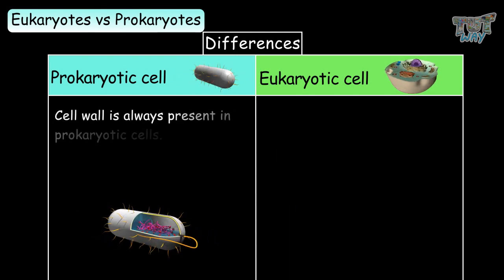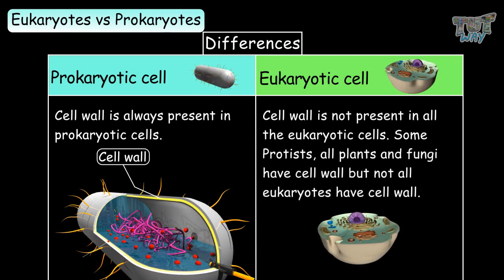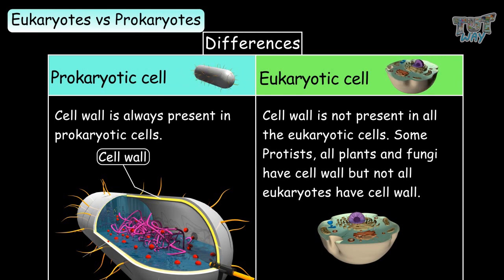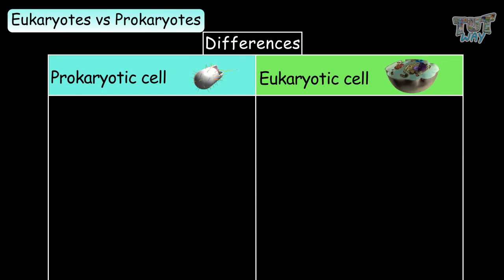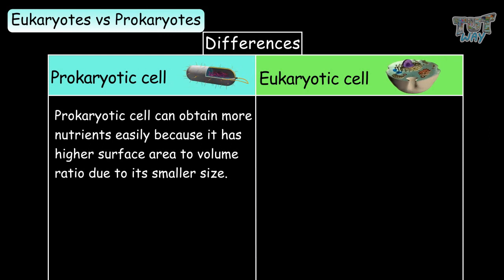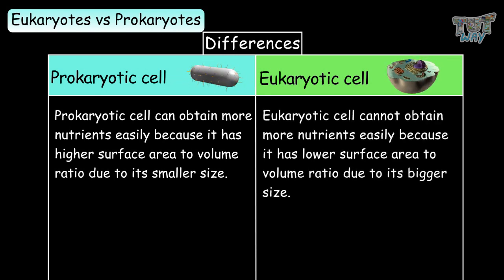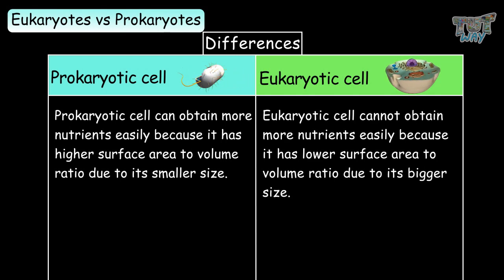The cell wall is always present in prokaryotic cells but not in all eukaryotic cells — only some protists and all plants and fungi have a cell wall. Prokaryotic cells obtain nutrients more easily due to a higher surface area to volume ratio from their smaller size, whereas eukaryotic cells have a lower ratio due to their larger size.